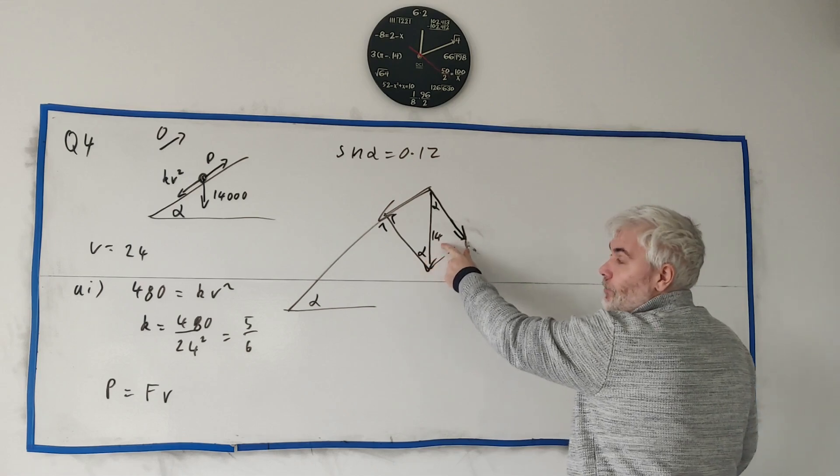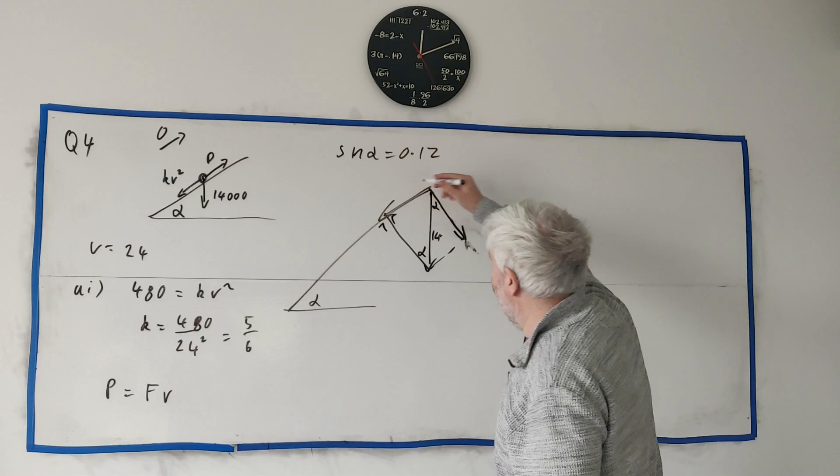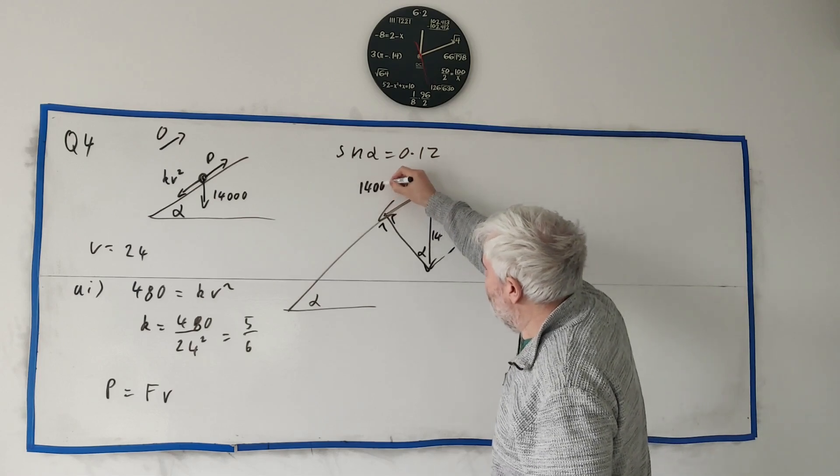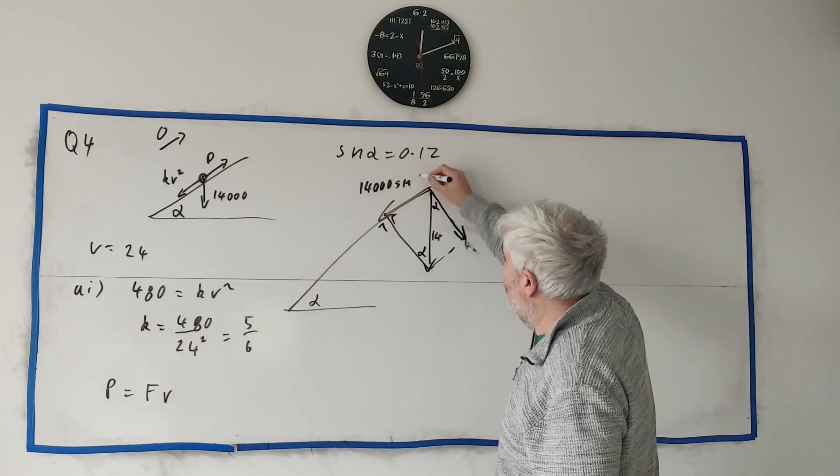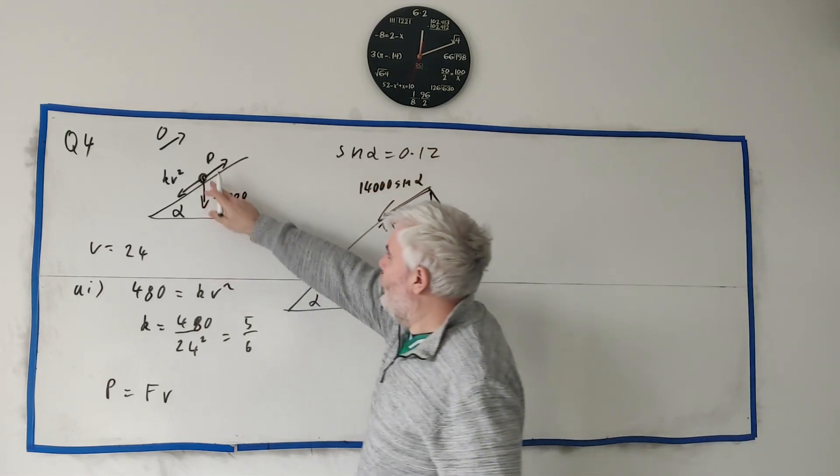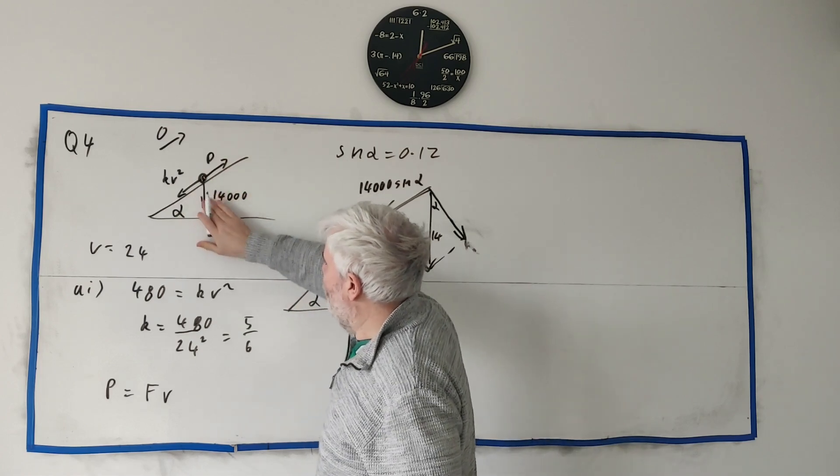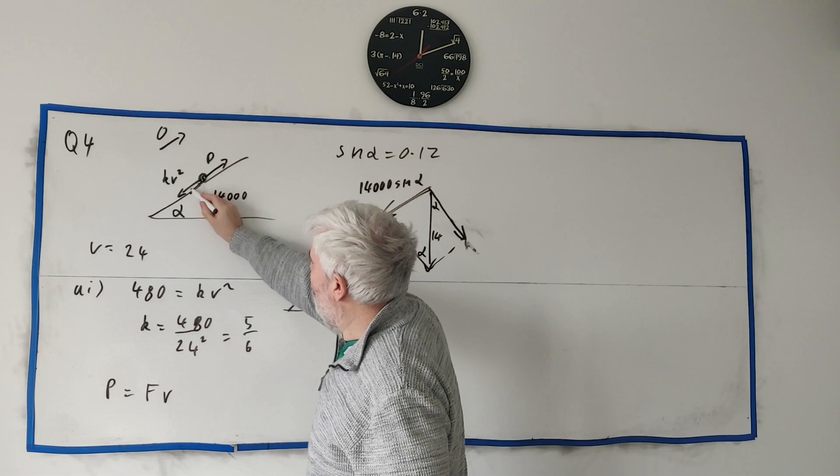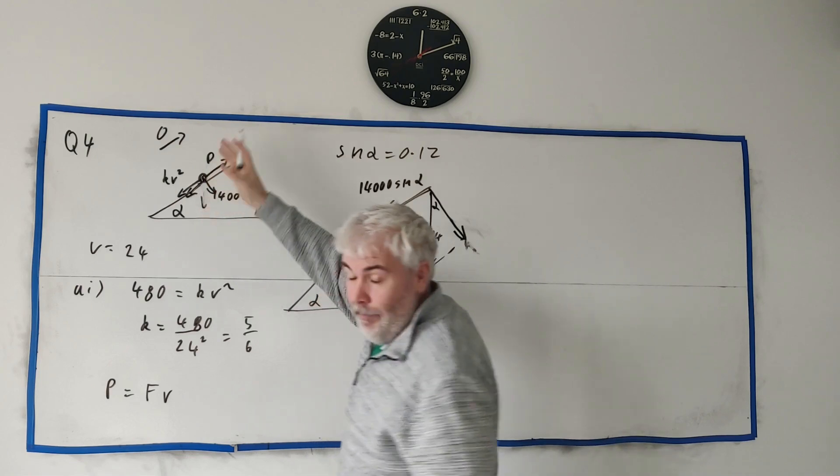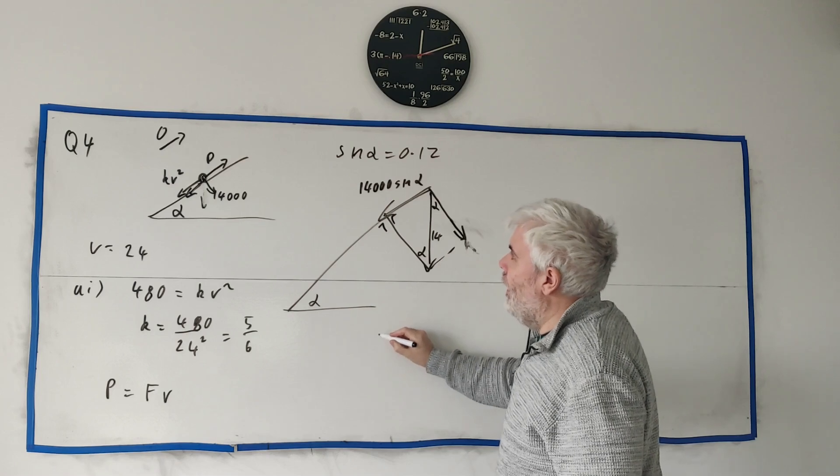So this length here is just sine. Sine of this angle multiplied by the hypotenuse. So the one we're looking for, this length down here is just 14,000 times sine of alpha. And we know what sine of alpha is. Okay, add all these up. The forces going down the hill. So we'll break this guy into one going down and one that doesn't matter going that way.